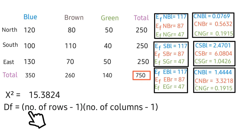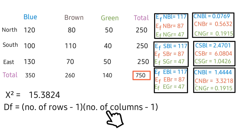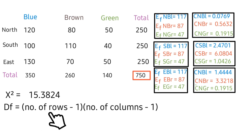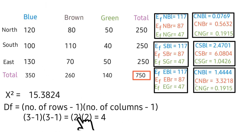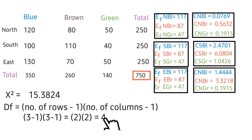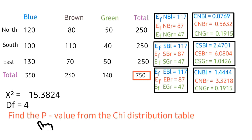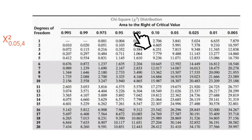Next, we determine the degrees of freedom using the formula: (number of rows minus 1) times (number of columns minus 1). We have three rows, so 3 minus 1 equals 2; and three columns, so 3 minus 1 equals 2. Therefore, 2 times 2 gives us 4 degrees of freedom.